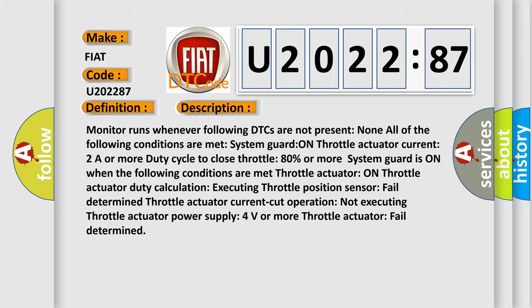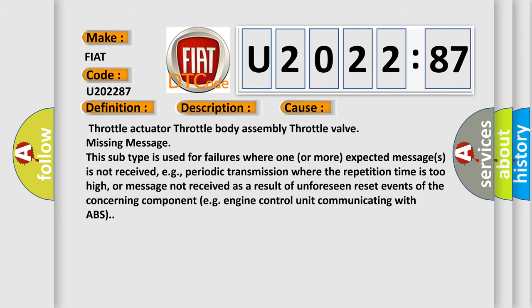This diagnostic error occurs most often in these cases: throttle actuator, throttle body assembly, throttle valve, missing message. This subtype is used for failures where one or more expected messages is not received, e.g., periodic transmission where the repetition time is too high, or message not received as a result of unforeseen reset events of the concerning component, e.g., engine control unit communicating with ABS.